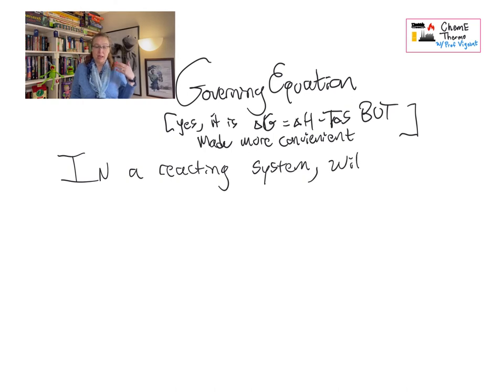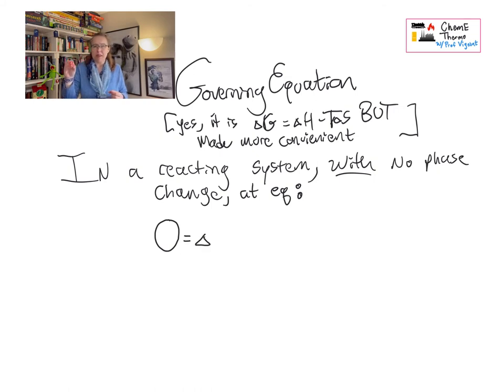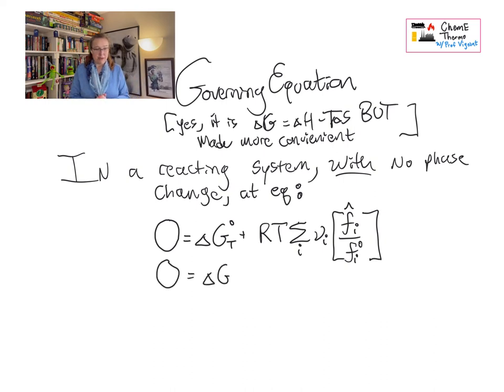Our governing equation at equilibrium—and again you can check either online, this is in Wikipedia, and certainly please check your textbook for this full derivation—we can go straight to the endpoint, which is at equilibrium for a reacting system. In the case where we are not also looking at a phase change, we have zero equals delta G of formation changed for this temperature plus RT sum of stoichiometric number times fugacity of the component with a hat divided by the standard state fugacity. And there you go. That is our governing equation.